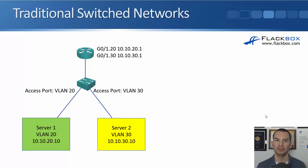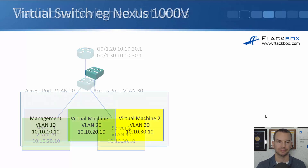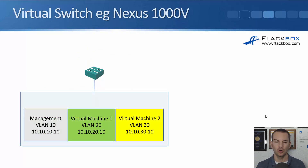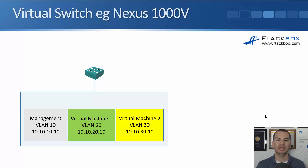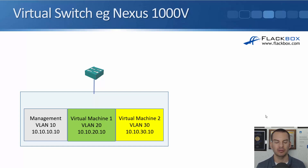Now let's see how things work when we've got multiple virtual machines running on a virtualized host. The blue box here is a single physical host with two virtual machines running on it — virtual machine 1 in VLAN 20 with IP 10.10.20.10, and virtual machine 2 in VLAN 30 with IP 10.10.30.10. We also need a management IP address on the host itself to manage it with our hypervisor software — that's 10.10.10.10 in VLAN 10.